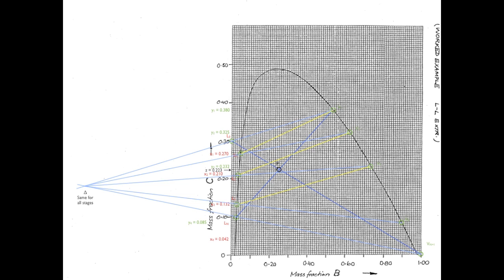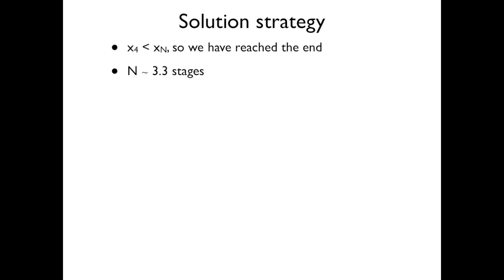Again, we draw our line from the delta point through L₃ to locate point V₄. V₄ and L₄ must be in equilibrium by definition. We read off the value of x₄ from our x-y distribution diagram, locate point L₄, and draw our final tie line. It can be clearly seen that x₄ lies below x_N, our final point, so we've reached the end. N is theoretically equal to approximately 3.3 stages.